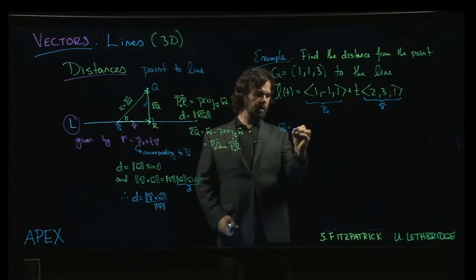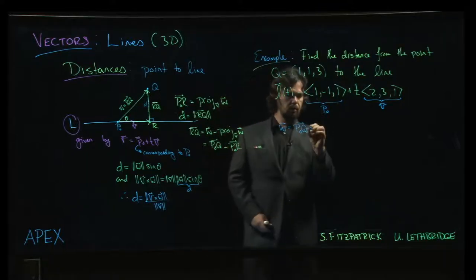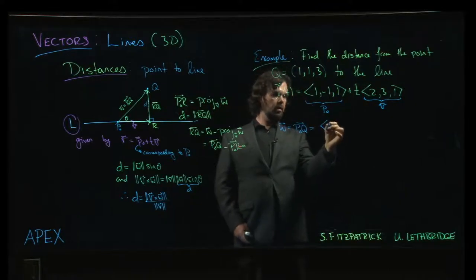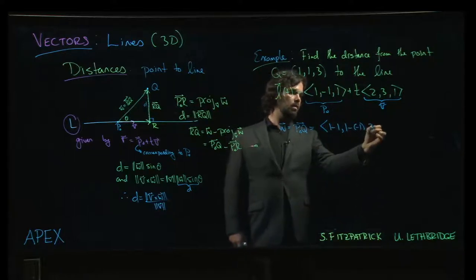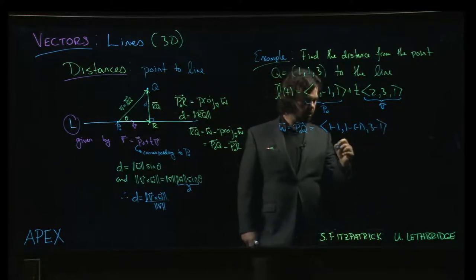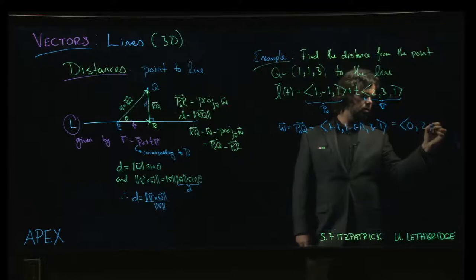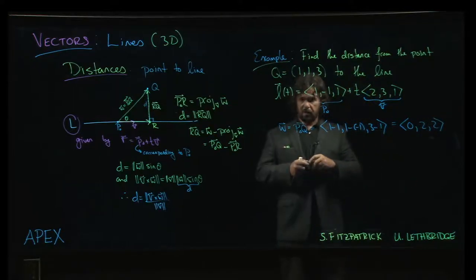So w is the vector from p0 to q. And so using head minus tail, 1 minus 1, 1 subtract minus 1, 3 subtract 1. So we get 0, 2, 2. Okay, so there's the direction vector.